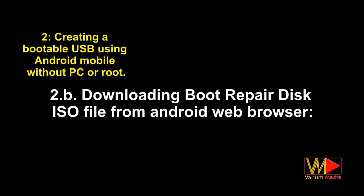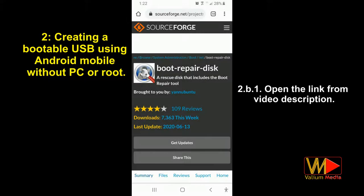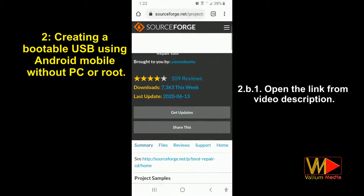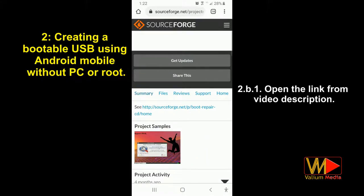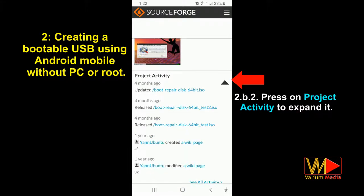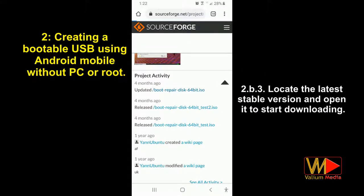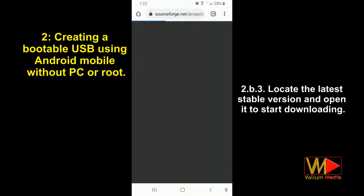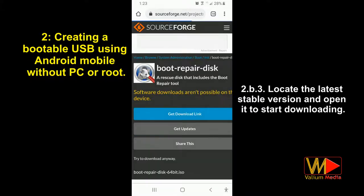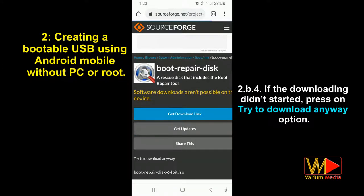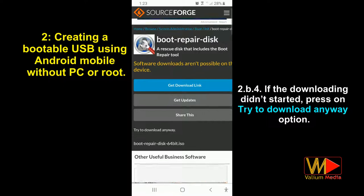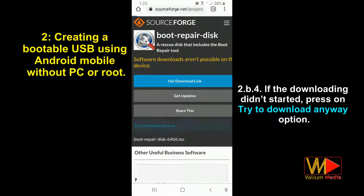Downloading the boot repair disk ISO file from the Android web browser: open the link from the video description. Press on project activity to expand it. Locate the latest stable version and open it to start downloading. If the download didn't start, press on the try to download anyway option.